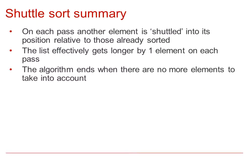To summarize, on each pass of the shuttle sort, another element is shuttled into its position relative to those already sorted. The list effectively gets longer by one element on each pass in terms of the number of numbers we are comparing. The algorithm ends when there's no more elements to take into account.